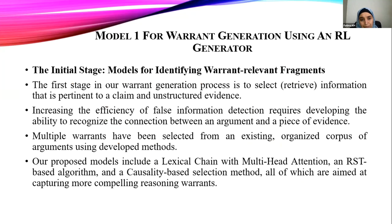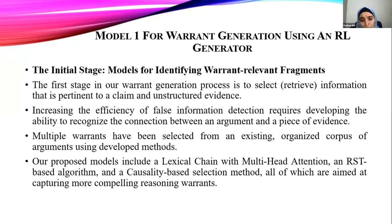Regarding the first model: the first step is to select and retrieve information relevant to a claim from unstructured evidence. Increasing the efficiency of false information detection requires developing the ability to recognize the logical connection between the argument and its components. We could have multiple warrants from there, and we apply three different methods to extract the most relevant information.